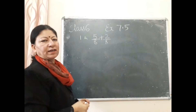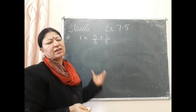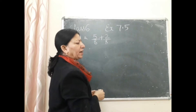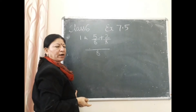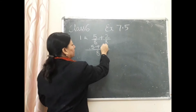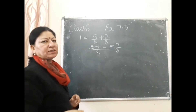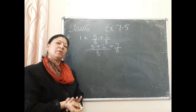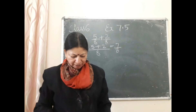वैसे तो नीचे denominator सेम है। Denominator अगर अलग-अलग होते हैं तो हम LCM लेते हैं, इसको भी मैं LCM लेके ही करना बताऊंगी। Denominator का LCM लेंगे — 8 आया। 8 की टेबल में 8 एक बार आता है, तो 1×5 = 5, plus 1×2 = 2 → 7 by 8. इसको आप इस तरीके से भी समझ सकते हैं: अगर denominator सेम है तो numerator को directly plus भी कर सकते हैं।